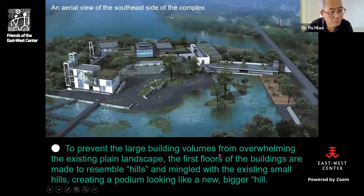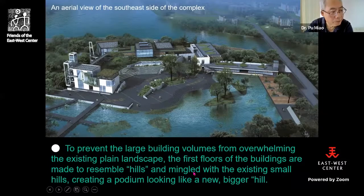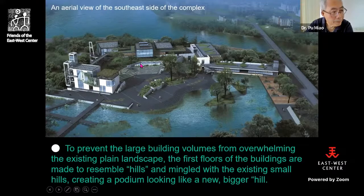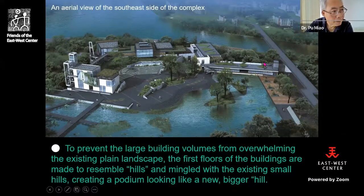To prevent the large building volume from overwhelming the plain landscape, the first floors of the buildings are made to resemble hills and are mingled with the existing small hills, creating a podium that looks like a new, bigger hill. The first floor is made to look like a man-made hill, while the second and third floors sit above it. We mingle this man-made hill with the three existing hills.